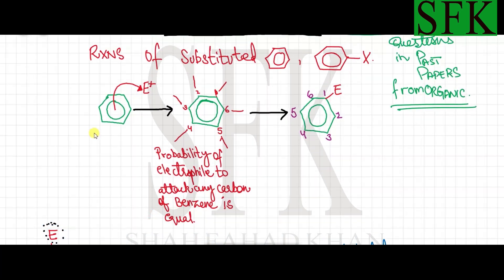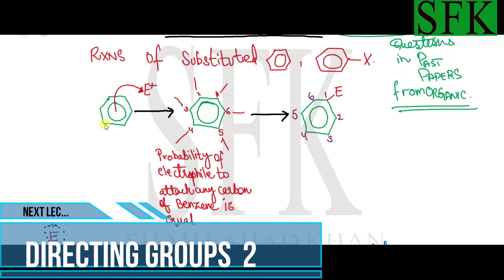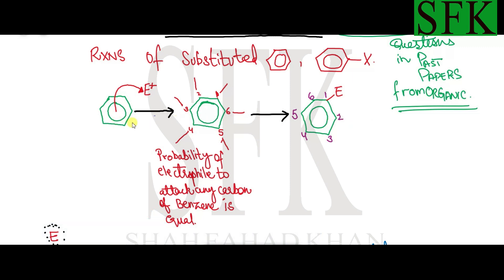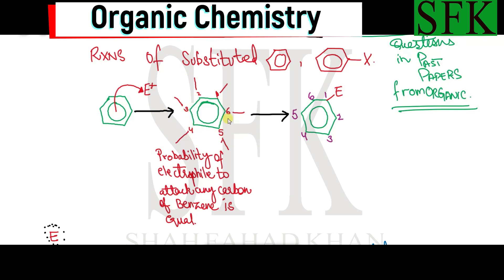In the previous videos on benzene, in the electrophilic substitution reactions when an isolated benzene ring that had no substituents attached was attacked by an electrophile, the electrophile could go on to any of the six carbon atoms of the benzene ring because the benzene ring is symmetrical and electron density is uniformly distributed, so the electrophile can attack any of the six carbon atoms with equal probability.